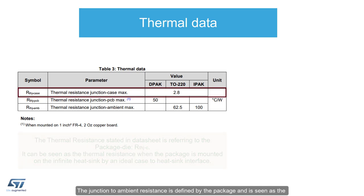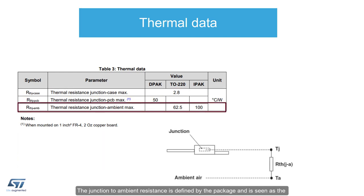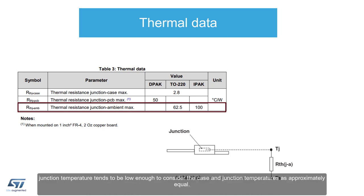The junction to ambient resistance is defined by the package, and is seen as the relationship between case temperature and power dissipation as the device sits in still air. In this condition, the power dissipation allowed by the maximum operating junction temperature tends to be low enough to consider the case and junction temperatures as approximately equal.